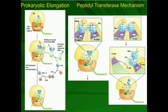Welcome back. In the two previous videos, we looked at assembly of the prokaryotic 70S ribosome and the eukaryotic 80S ribosome. Now we're talking about elongation.